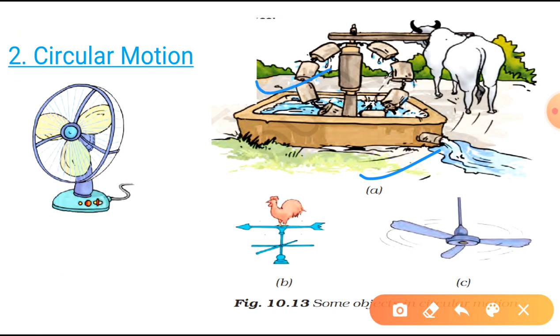And look at the wheel. This wheel is also moving. So it's also showing the circular motion. Fan, it's also a type of circular motion. Then, you can see wind vane is here. So it also rotates, showing the circular motion.